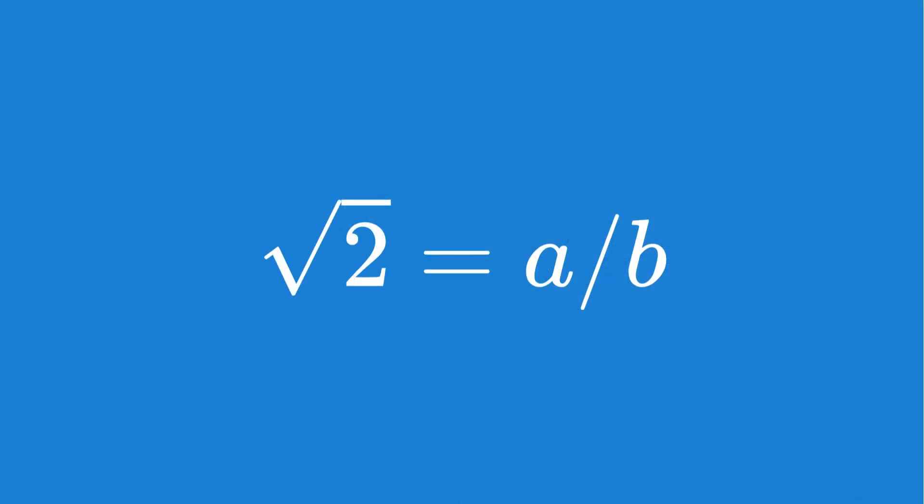First, let's assume that the square root of 2 is rational, so we can express it as a simplified fraction where a and b don't share any factors.